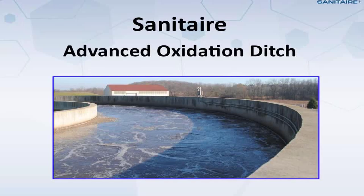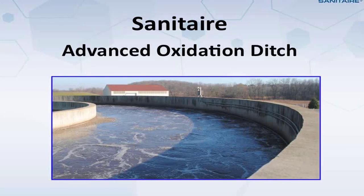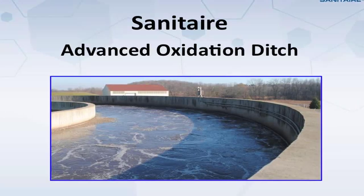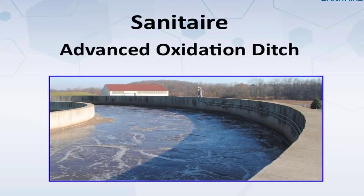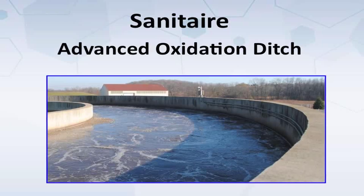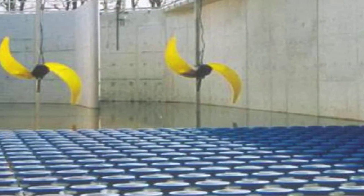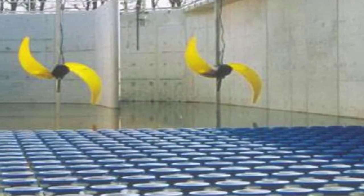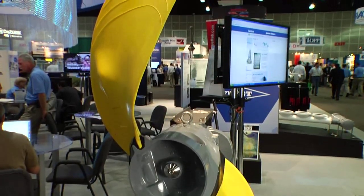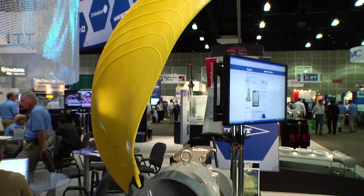The oxidation ditch is an activated sludge process, oftentimes employed for biological nutrient removal. The Sanitare oxidation ditch is unique in that it utilizes submersible mixers along with fine bubble diffused aeration. It offers operating flexibility by separating the aeration and the mixing device.